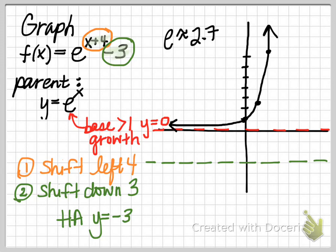Now we'll take each of our coordinates and shift them each left 4 and down 3. So starting with our y-intercept, which is currently here at 0 comma 1, if we go left 1, 2, 3, 4, and then down 1, 2, 3, that puts my new coordinate at negative 4 comma negative 2.